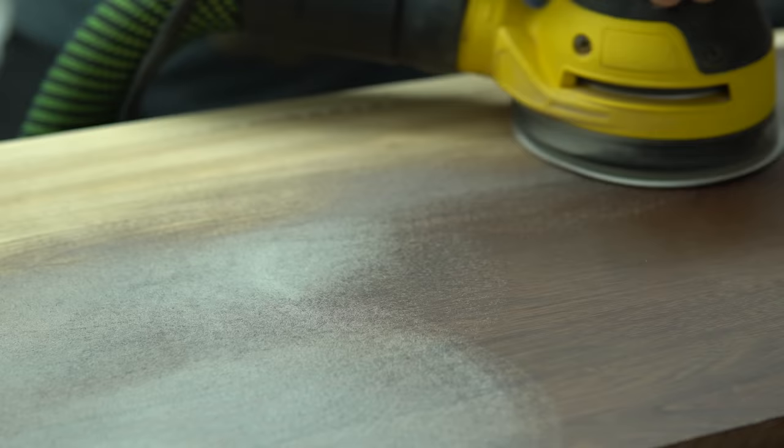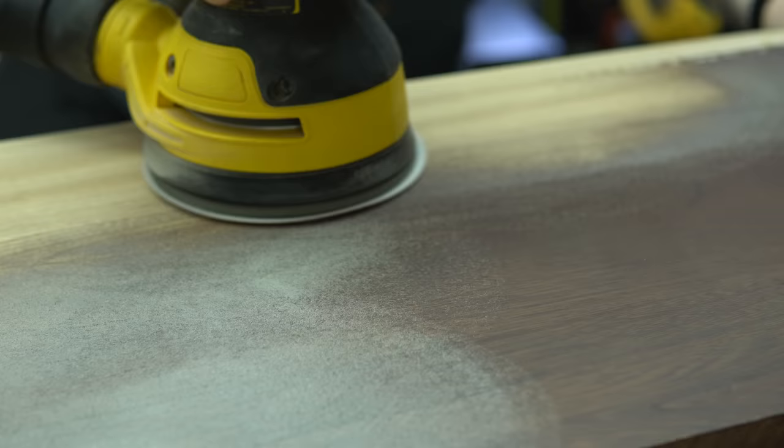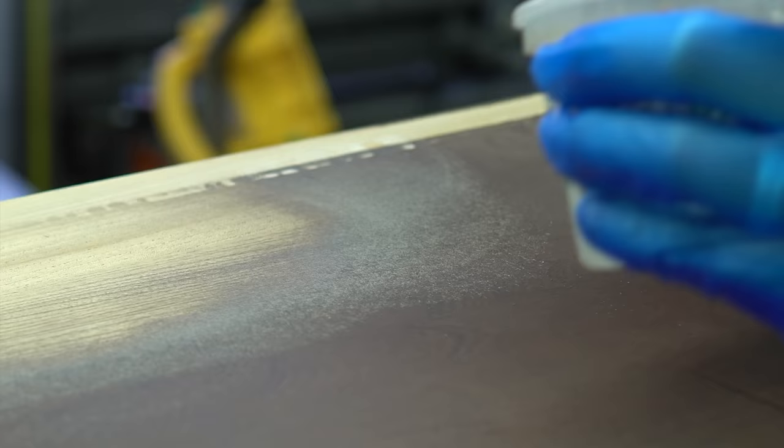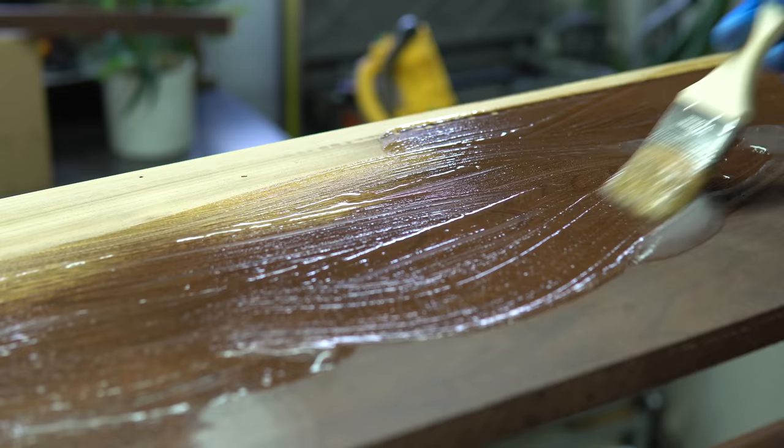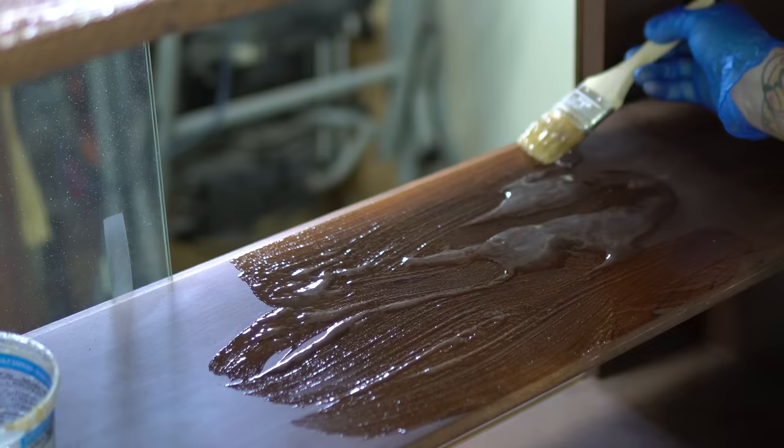It would have taken ages and ages and dozens of sanding pads to sand through this old finish. So a few minutes in, I decided to switch to a chemical stripper, which will make it a lot easier to get most of the finish off. And then I can go in and sand the rest.